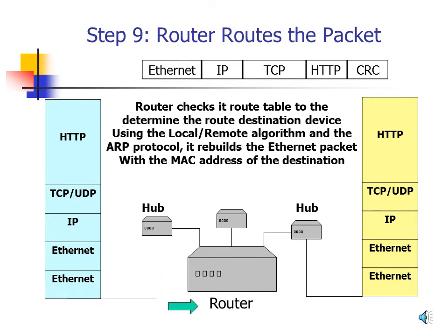Step 9: The Router Routes the Packet. The Ethernet packet arrives at the router, which receives it on its Ethernet card. Ethernet on the router processes the packet and hands it to the IP program. IP examines the destination IP address in the packet header and compares it against its routing table. It determines the destination is on a directly connected segment, uses ARP to find the destination computer's MAC address, encapsulates the IP packet in a new Ethernet header addressed to that computer, converts it to an electrical waveform, and sends it out. The hub forwards the packet and the destination computer's Ethernet card receives it.